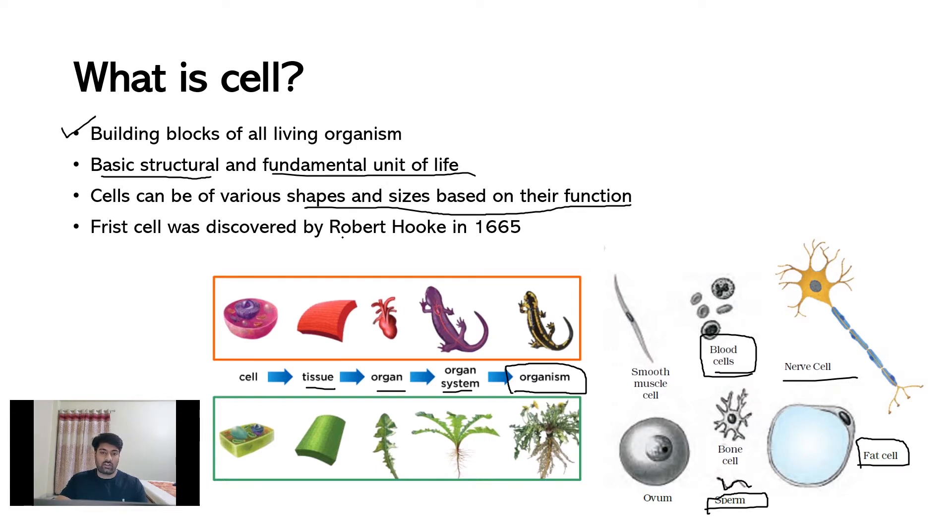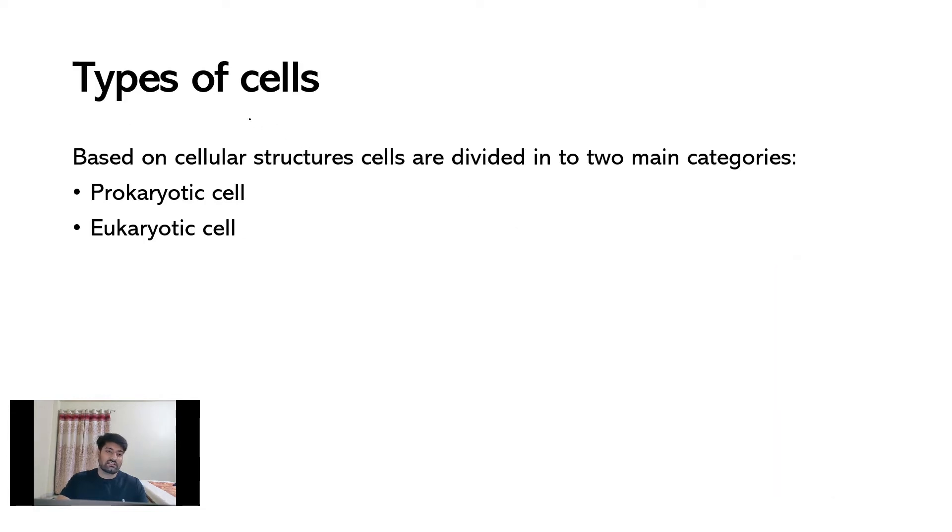The first cell was discovered by Robert Hooke in 1665 using his compound microscope. Now moving on to the next slide, types of cells.